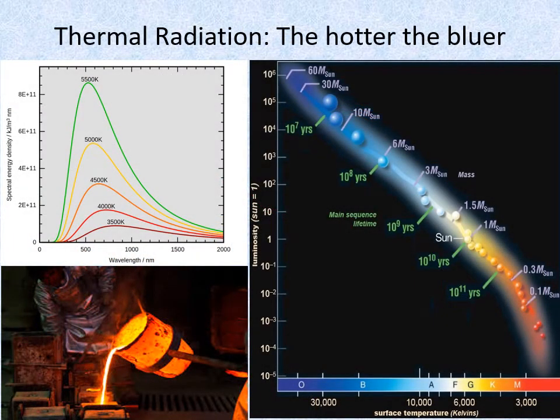All matter with a temperature above absolute zero emits thermal radiation. This is due to the thermal motion of its particles, which accelerates and oscillates its electrical charges and thus, as we have seen, produces electromagnetic radiation.